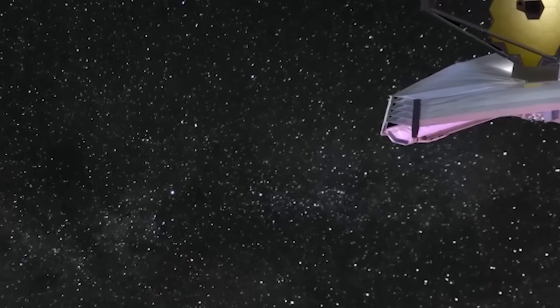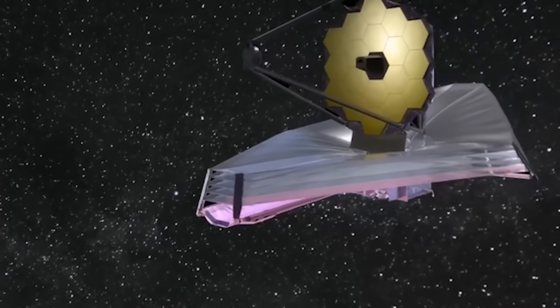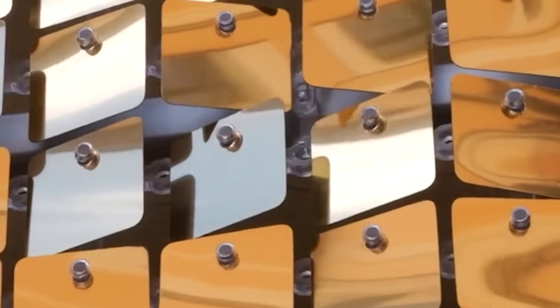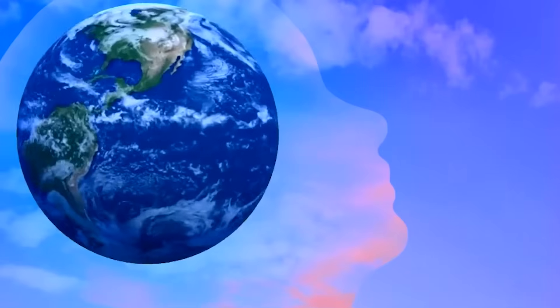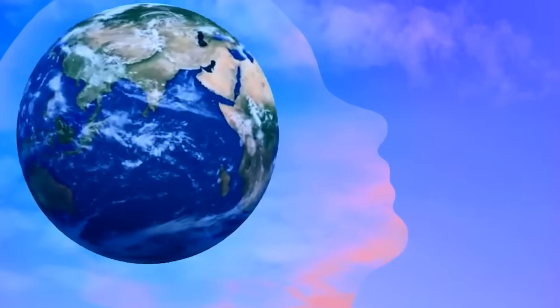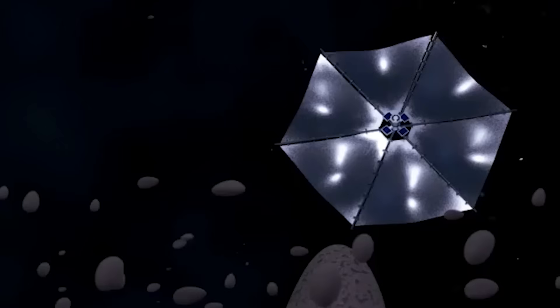This massive telescope, the size of a tennis court, had to fold like cosmic origami to fit inside a rocket. Its golden mirrors and five-layer sunshield were packed with absolute precision. Failure was not an option. The world held its breath as it soared from French Guyana, beginning its million-mile journey.